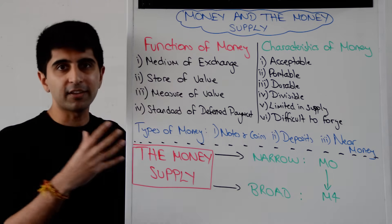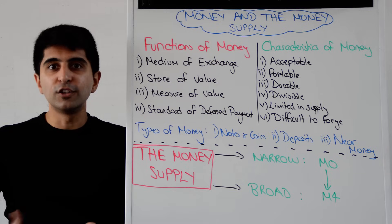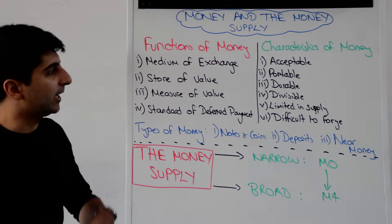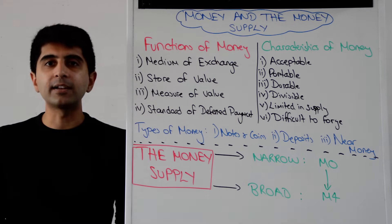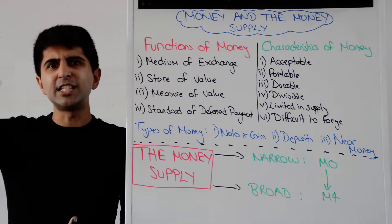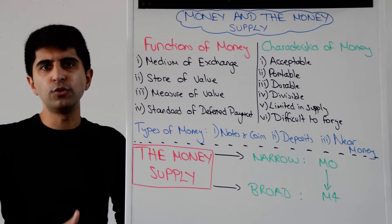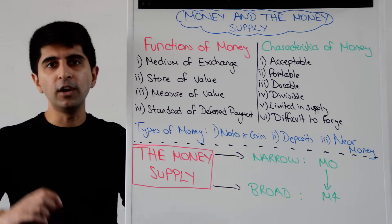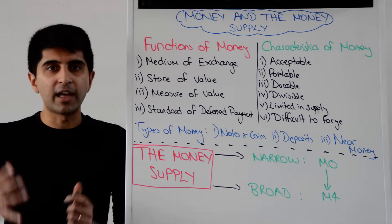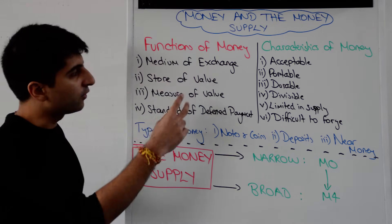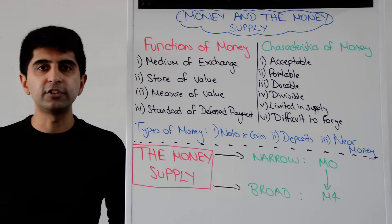So the medium of exchange function is really important — it allows the economy to run. Money also has to act as a store of value. It can't deteriorate over time. For example, if you use commodities like fruits, they go bad and lose their value over time. So money has to satisfy that store of value function.